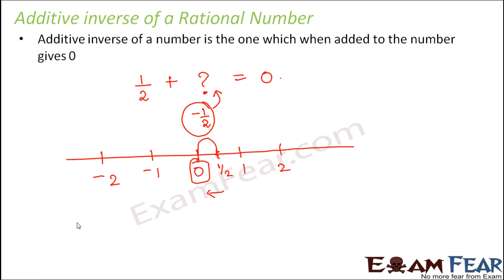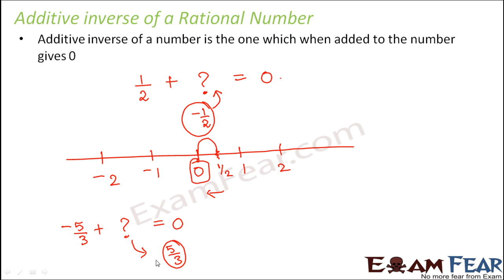Let us take another example. What is that number which when added to minus 5/3 would give us 0? The simple tip to remember to find out the additive inverse is that you just reverse the sign. So in this case the number has a negative sign, therefore its additive inverse will have a positive sign. So the question mark should be replaced with plus 5/3.